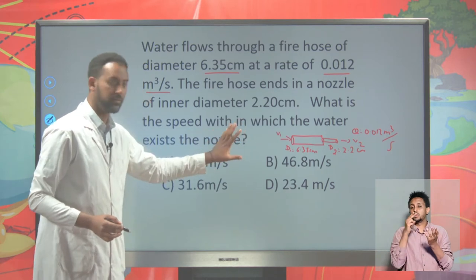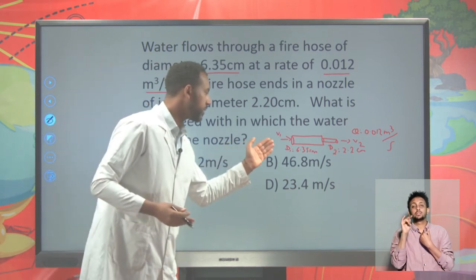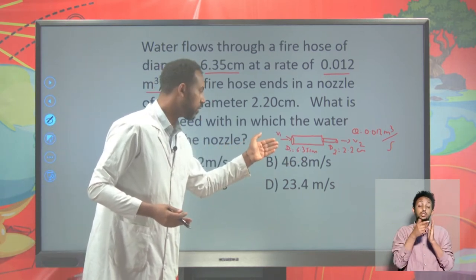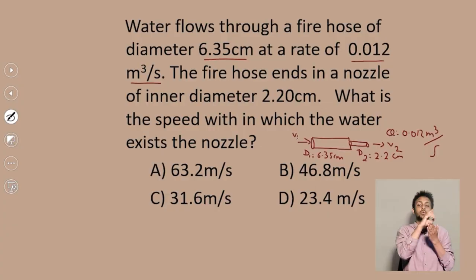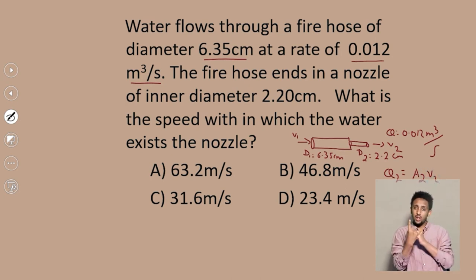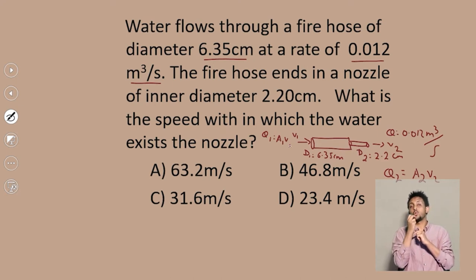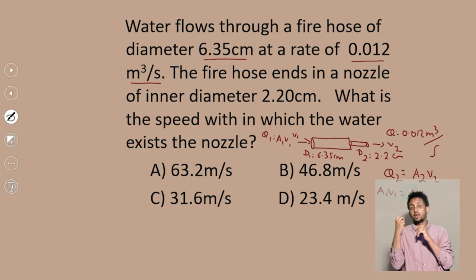The only concept we have is flow rate. The flow rate at section 1 (the hose) and at section 2 (the nozzle) remains constant by the law of continuity. Therefore, flow rate at section 2, Q2, equals area 2 times V2, and at section 1, Q1 equals area 1 times V1. We equate these: A₁V₁ = A₂V₂.